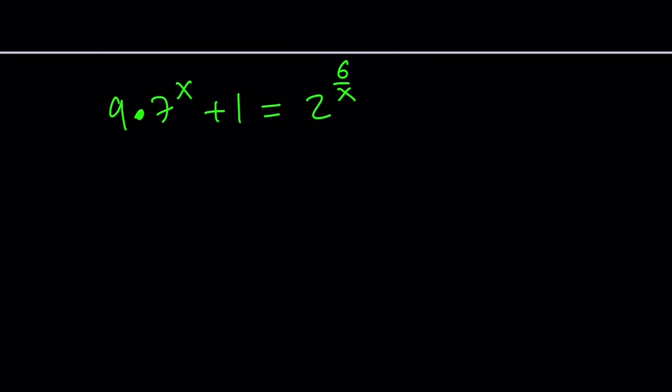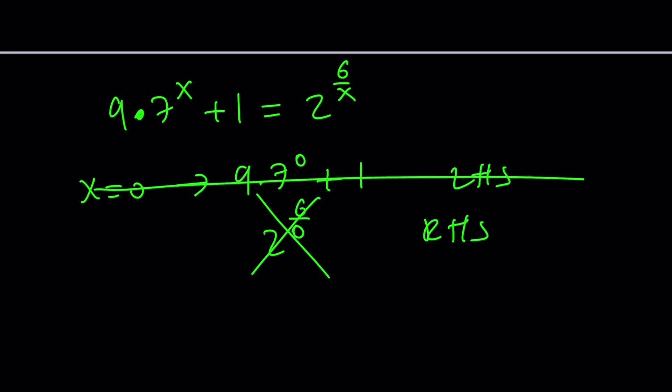For example, some of the simple cases like x equals 0. Is x equals 0 a solution? Let's find out. If x is 0, we get 9 times 7 to the power of 0 plus 1 on the left-hand side, and on the right-hand side, we get 2 to the power of 6 divided by 0. Uh-oh, this is impossible, right? We can't replace x with 0 because x is in the denominator. So, this tells us that x equals 0 is definitely not going to be a solution.